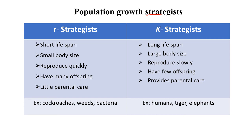Population growth strategies are of two types: R-selected species and K-selected species. R-selected species follow the J-shaped exponential growth curve. They have a very short lifespan, small body size, reproduce very quickly and produce many offspring, and have little or no parental care. Examples include fish populations, weeds, and bacteria.